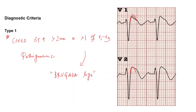Type 1 is the coved pattern. Type 2 has a saddle back type ST segment elevation — there will be some concavity upwards — and here also the ST segment elevation has to be more than 2 mm. In Type 3, the morphology can be either type 1 or type 2, but the elevation is less than 2 mm. That is the only difference.